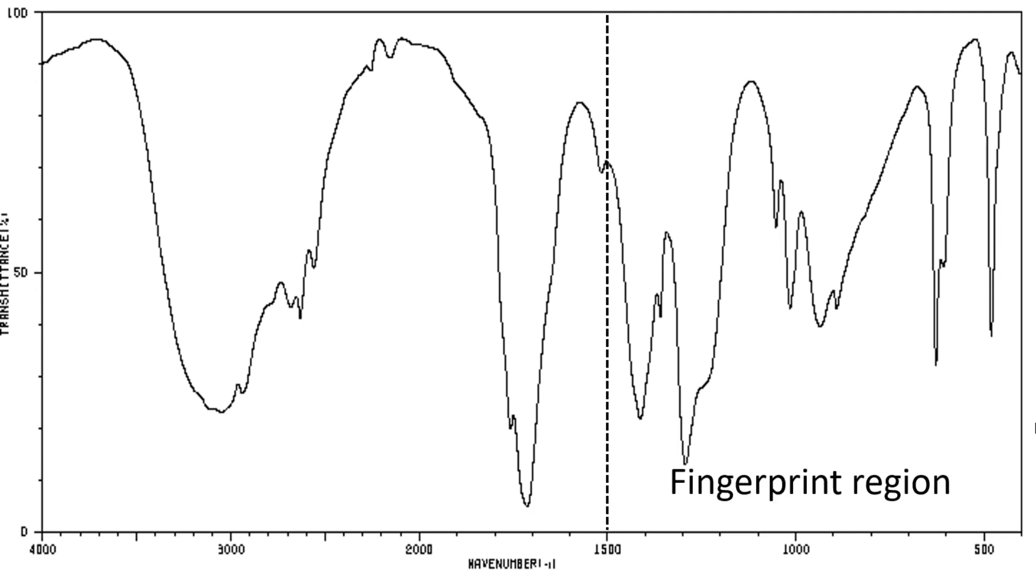Just like a fingerprint is unique to one person, the fingerprint region is unique to one chemical. So if you match this fingerprint region to the fingerprint region of a known substance in a database, you could use that to identify a sample where you have an exact match.